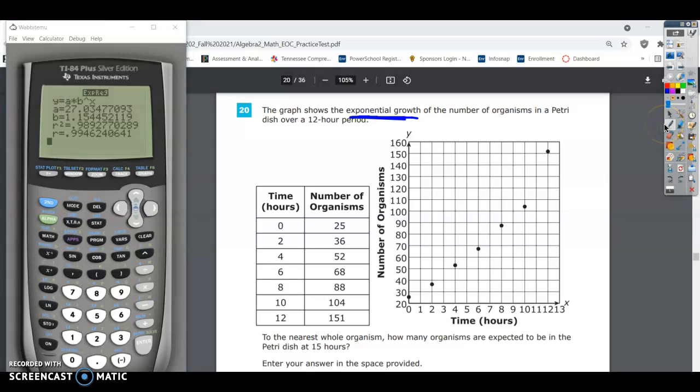All right. So with this, we're going to have y equals 27. It's a times b to the x power. So that's our equation. All I'm doing is taking a and b and plugging it in. So I'm going to times that by 1.15. And it says to the x power. In this case, we want to know the 15th hour. So we're going to put in a 15 here.